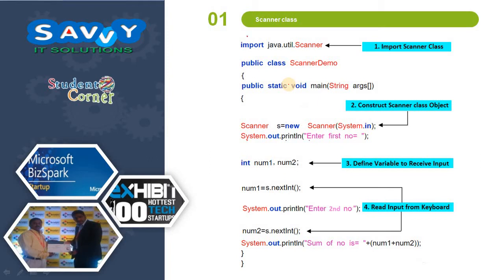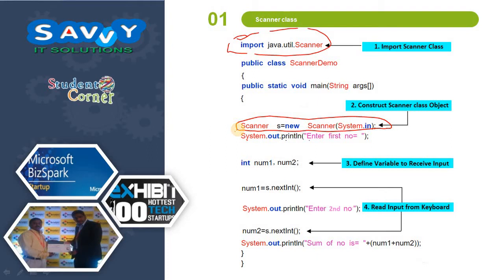This is the way we are importing the Scanner class. Next we need to create an object for the Scanner class — also called constructing the Scanner class object. Followed by that, we need to define the variables and use them in such a way that we are giving input.